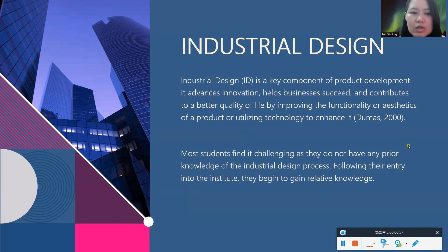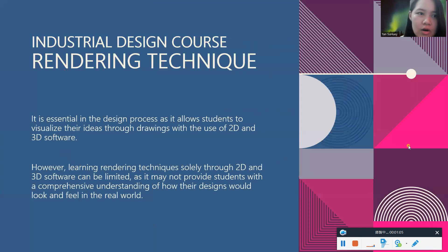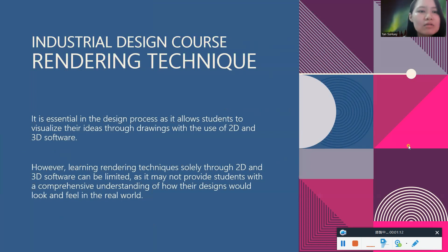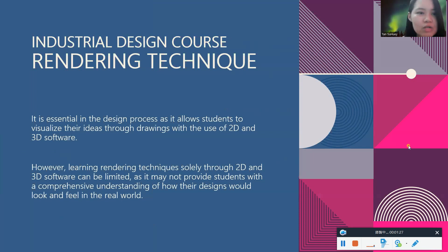Following their entry into college, students begin to gain relative knowledge. In the industrial design course, particularly for the rendering technique subject, students visualize their ideas through drawings using 2D and 3D software. However, learning rendering techniques using only 2D and 3D software can be limited, as it may not provide students with a comprehensive understanding of how their designs would look and feel in the real world.